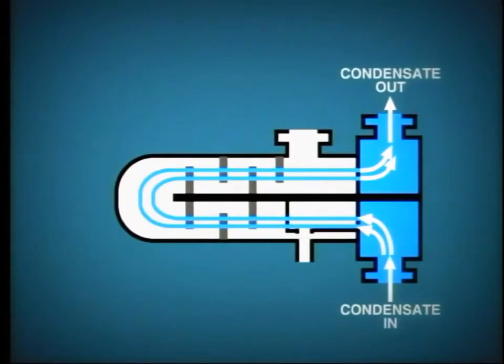The condensate is pushed through the large number of tubes, typically about 300, by the pressure on the condensate pump discharge. The tubes are supported and held in place by internal baffles.